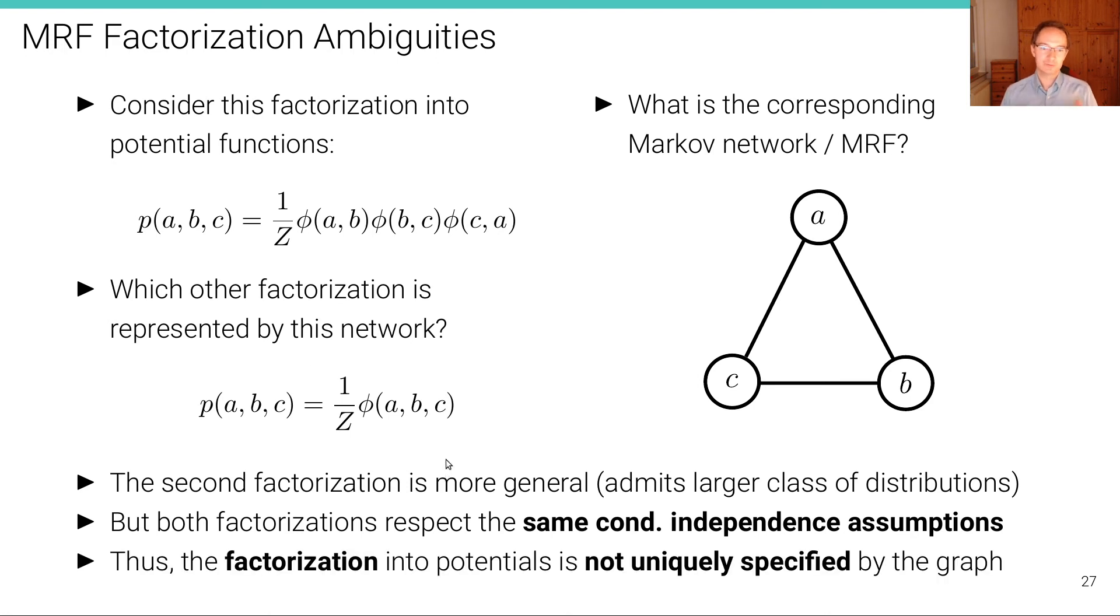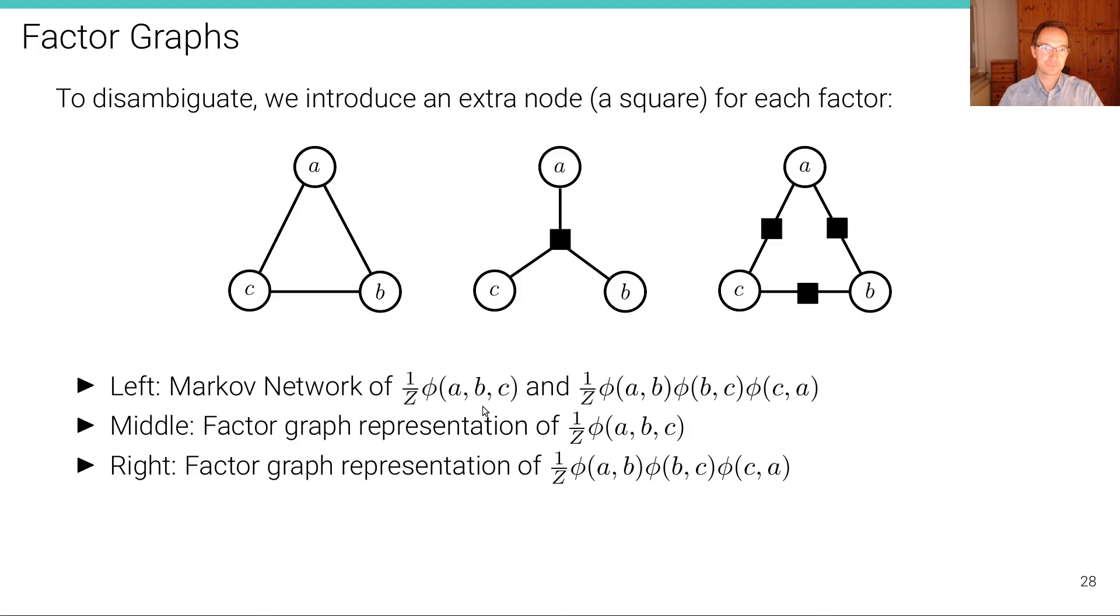Therefore, the factorization into potentials is not uniquely specified by the graph in the case of a Markov random field. And to disambiguate this, we introduce an extra node in our factor graphs. This is the new representation. And this extra type of node, we're going to utilize a square to distinguish these nodes from the random variable nodes, which are circles.